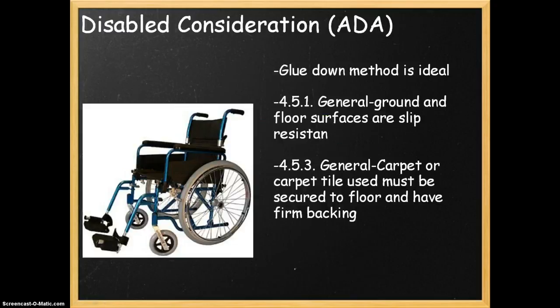The next section is disabled consideration, or ADA, which deals with universal design. One method advised for carpet tile in universal design is the glue-down method of installation. This gives the highest assurance that, through aging, it won't lift or pull at the edges, which could cause things to get stuck. This would be particularly beneficial for nursing homes, assisted living facilities, or hospitals where wheelchairs are frequently used, reducing the chance of injury.